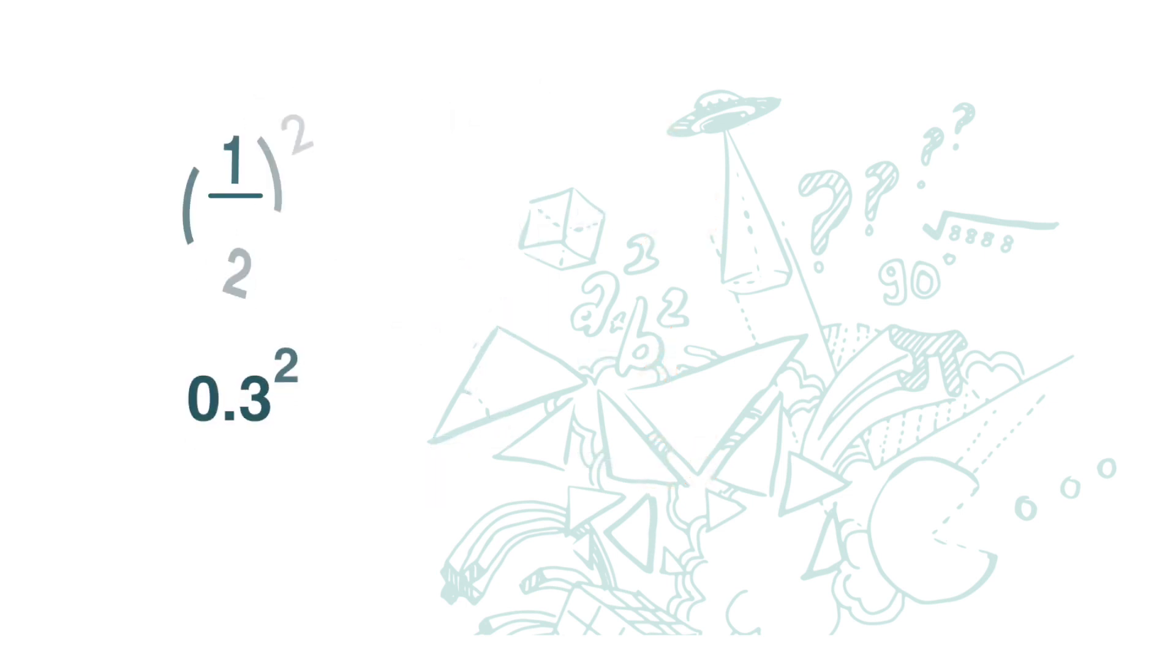Next we are going to look at the square of numbers smaller than 1. Let's look at the following example: 1 over 2 square is 1 over 2 times 1 over 2, which equals 1 over 4. Notice that 1 over 4 is smaller than 1 over 2. 0.3 square is 0.3 times 0.3, which equals 0.09.